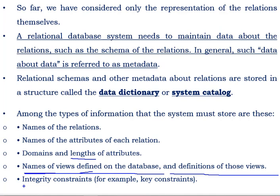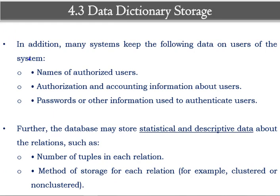The next one is integrity constraints. For every relation, we put some integrity constraints — these may be referential integrity constraints, primary key constraints, unique key constraints, not null constraints, and so on. Whatever constraints we have applied to the database, all this information is held by the data dictionary or system catalog. In addition, data dictionary storage can also hold the names of authorized users, which users are authorized for which relation, and authorization and accounting information such as passwords and user IDs.